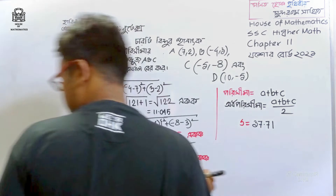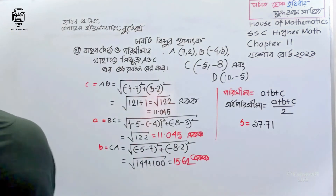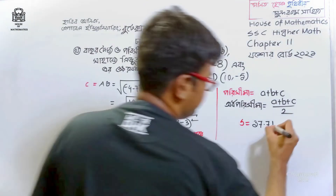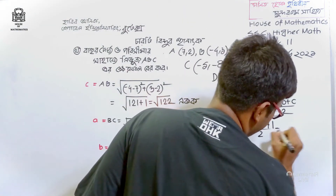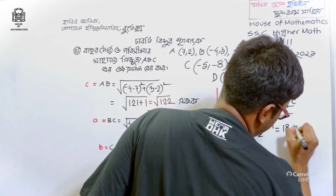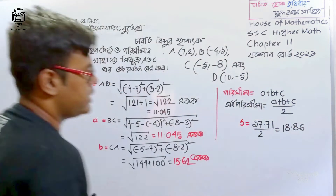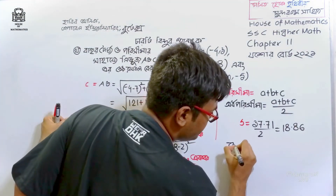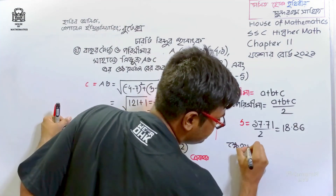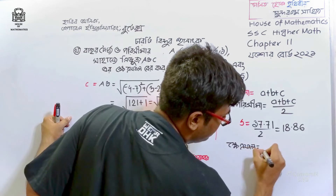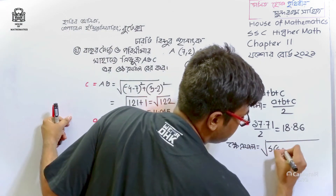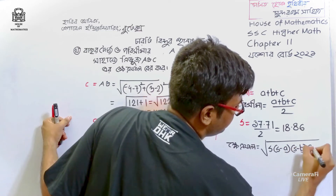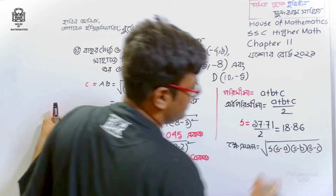This is equivalent to 4. This is equivalent to 4. This is equal to 8. This is equivalent to 8. This formula is the root of s into s-a, s-b, s-c.